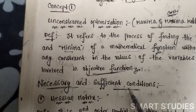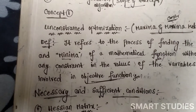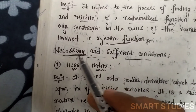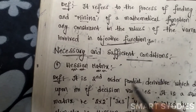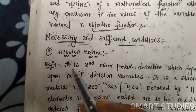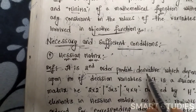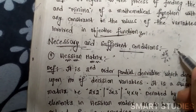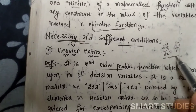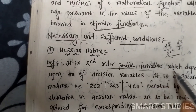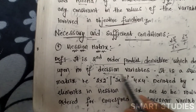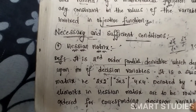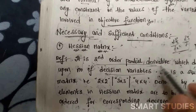The necessary and sufficient conditions in the maxima-minima method require us to know about the Hessian matrix. The Hessian matrix is based on second-order partial derivatives — that is, ∂²f/∂x², ∂²f/∂y², and so on — which depend upon the number of decision variables, where decision variables means x, y, z, a, b, c, etc.